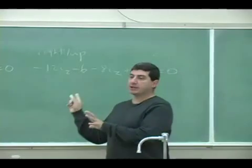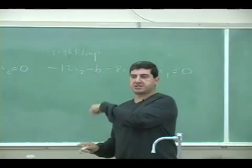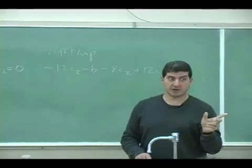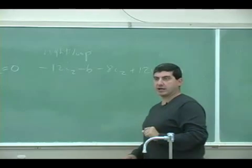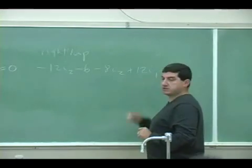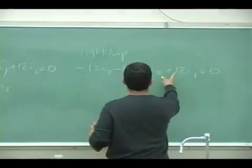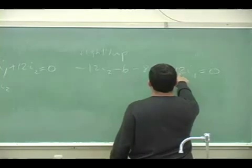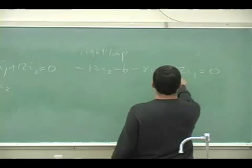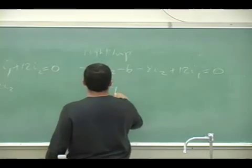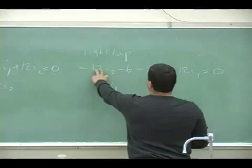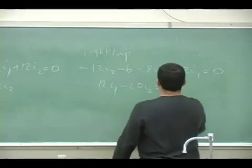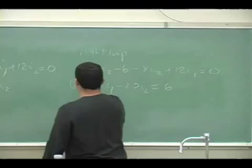In other words, when you're doing the right loop, the currents in the right loop are all negative because you're going with the I2. But you're going against the I1. So you add the I1. You gain the 12I1. So now 12I1, and then negative 12, negative 8 is negative 20I2 is equal to 6. This is my second equation.